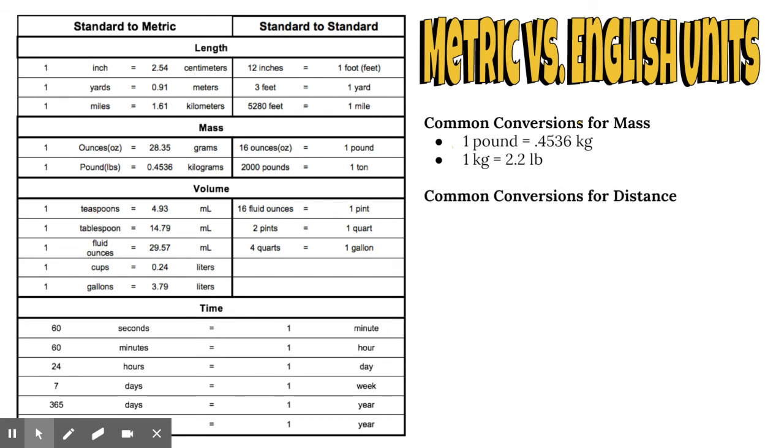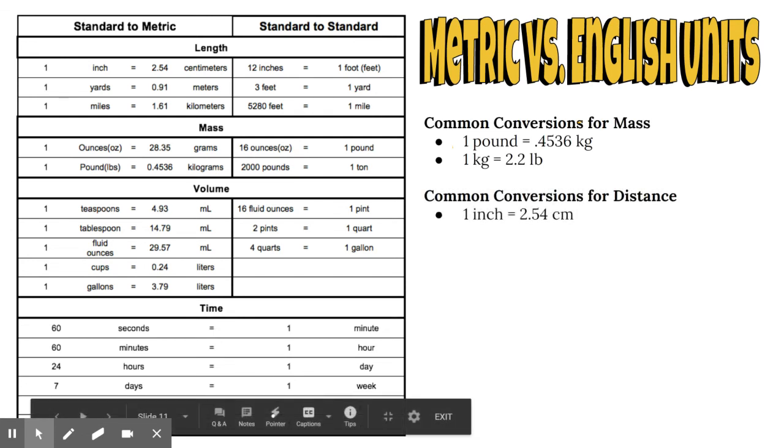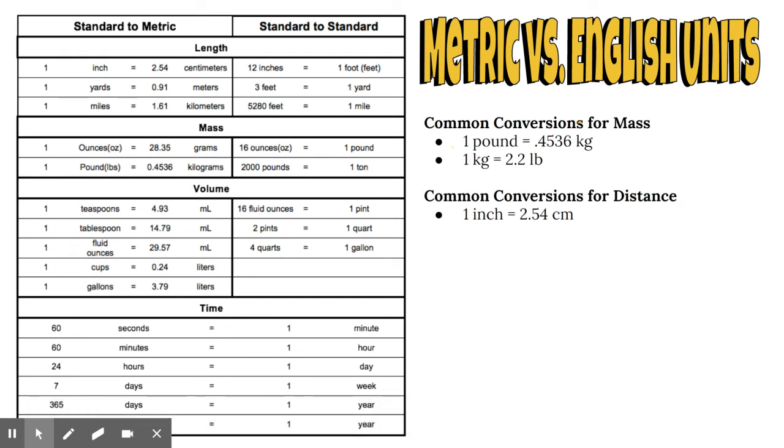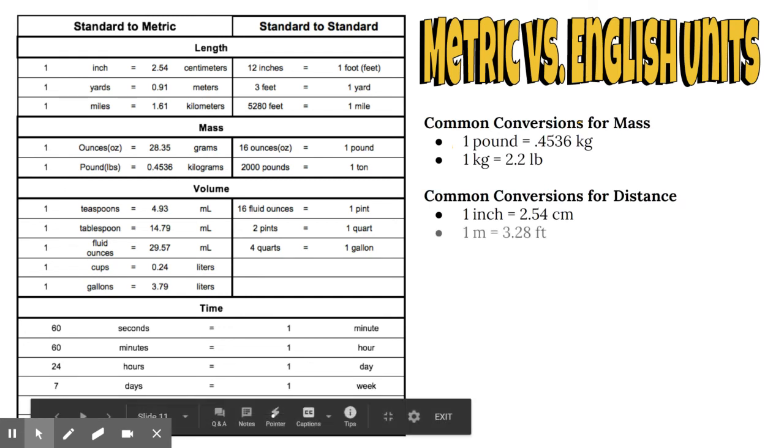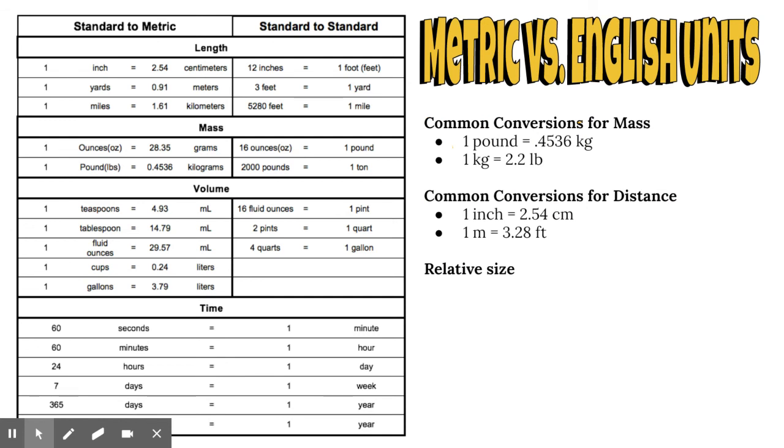Common conversions for distance: one inch is about 2.54 centimeters. About two and a half centimeters fit into every inch. There's about 3.28 feet in every meter. What does that really mean? A lot of people don't know exactly what that looks like.